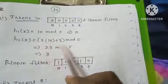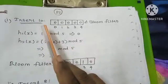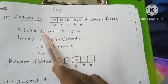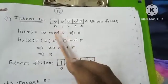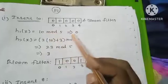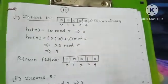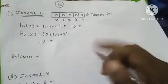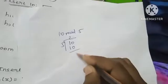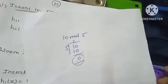Now the value of x is 10. We apply h1: 10 mod 5. Ten divided by 5 gives remainder 0. So the index position 0 is set.